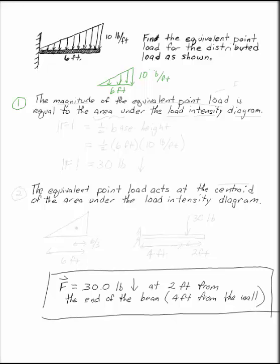The magnitude of the equivalent point load is equal to the area under the load intensity diagram. So the magnitude of F, this is F, is the area. The area of a triangle is one-half base times height.